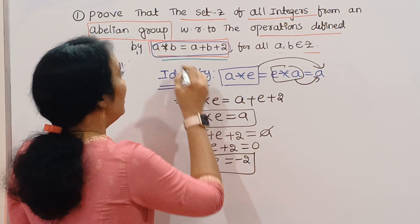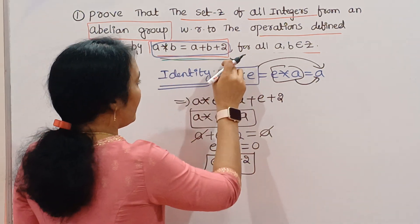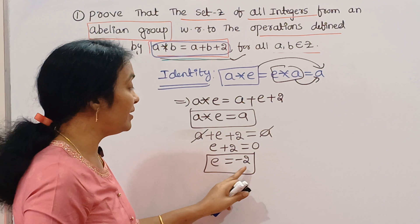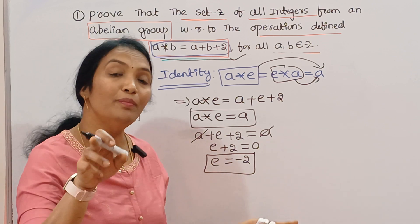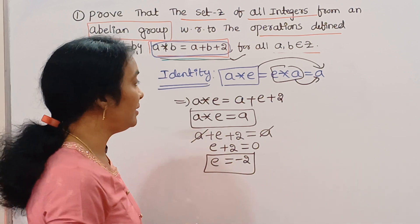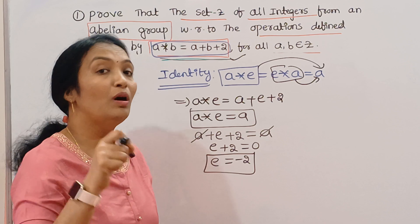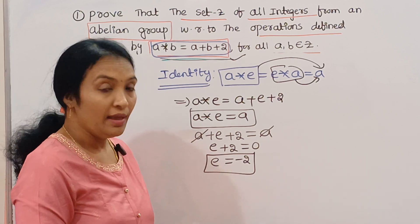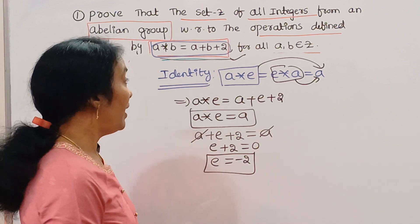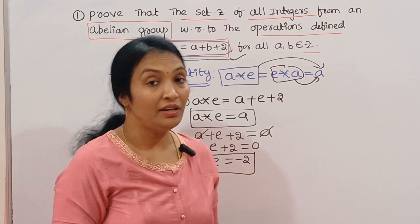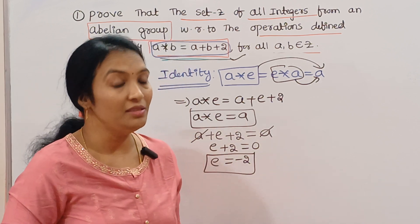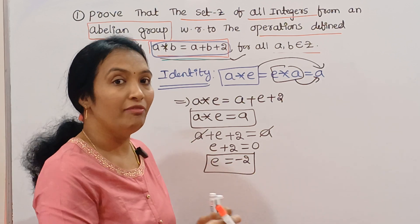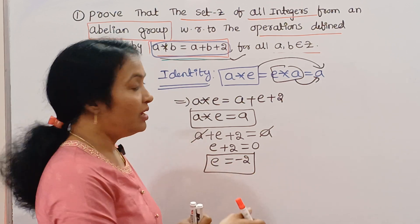From our given set, the identity element is minus 2. You have additive identity 0, multiplicative identity 1, but here from this problem the identity element is minus 2. Identity holds. Now I am going to check inverse.